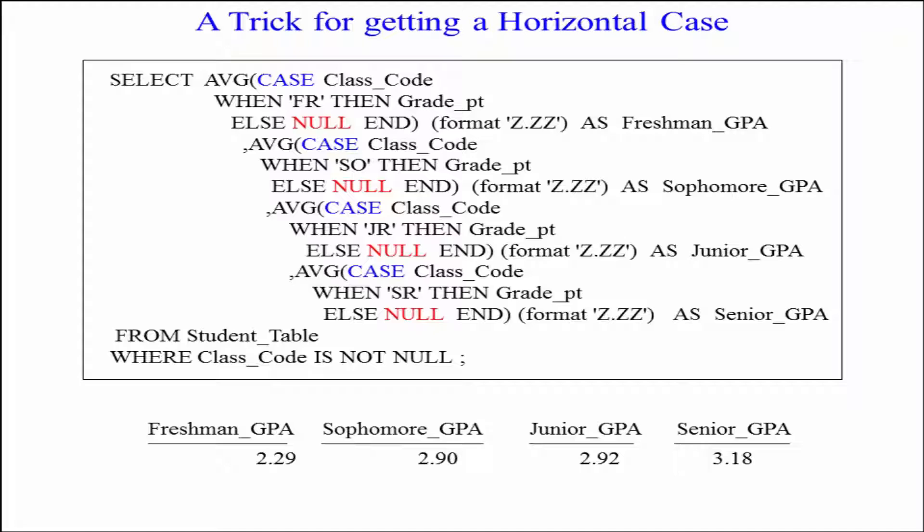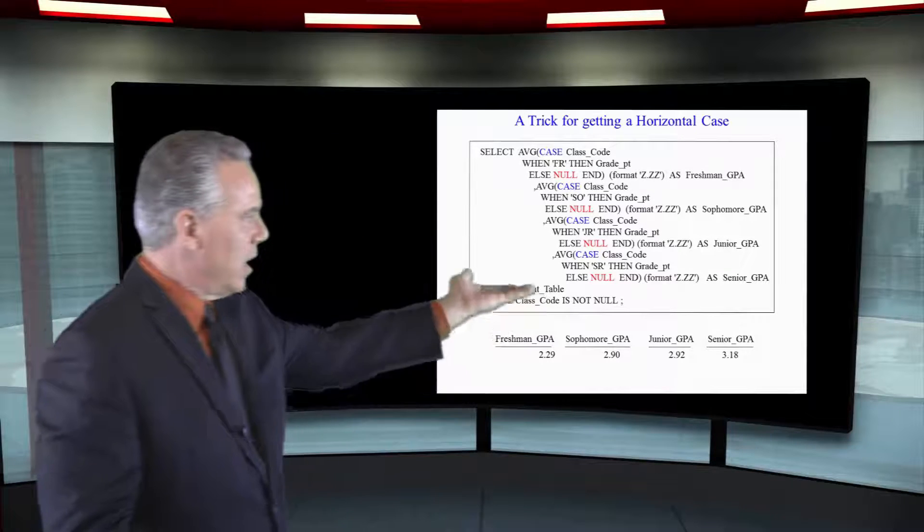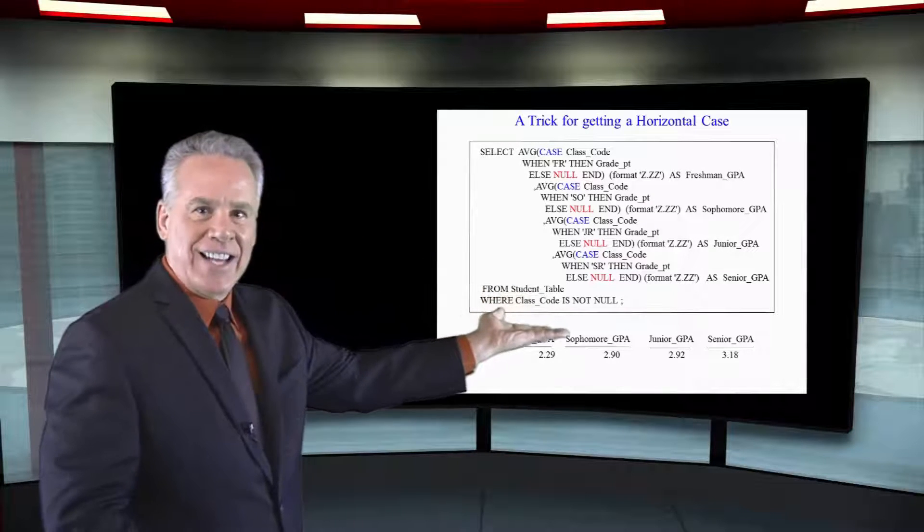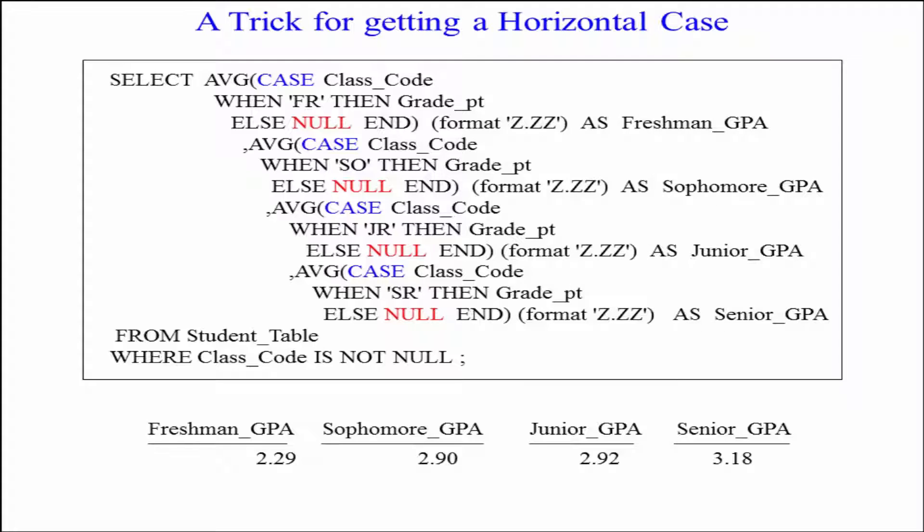We select the average and we case the class code. When freshmen grade point, and that's going to go into that average. Else nulls. Then it goes to the next comma and sees the case statement again and says case class code.